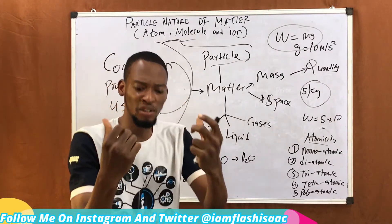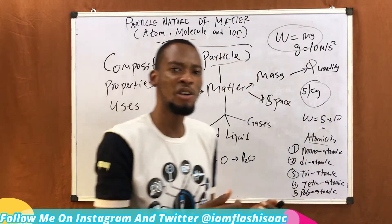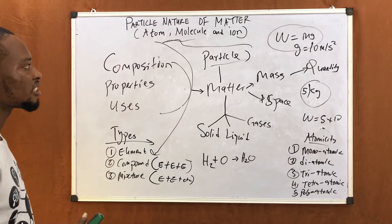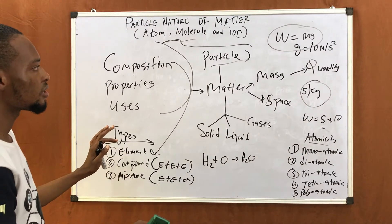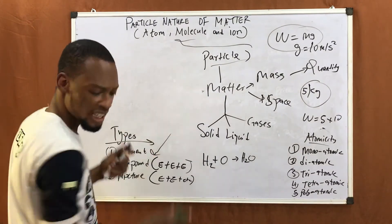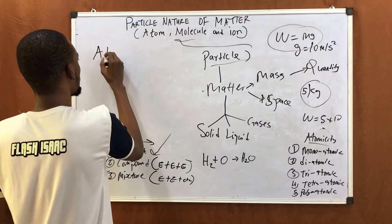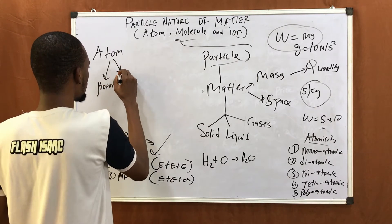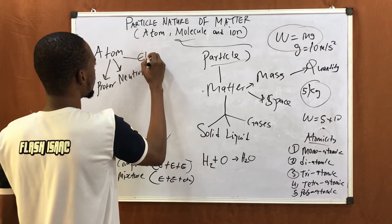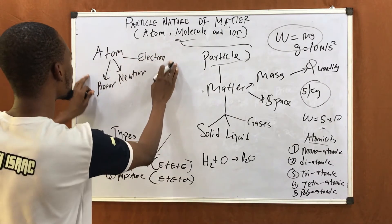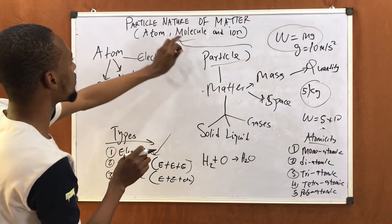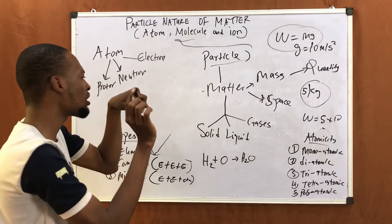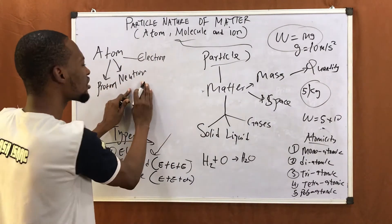Although an atom is the smallest particle of an element, atom itself has particles — they are called subatomic particles. These are proton, neutron, and electron. Proton and neutron are at the center of the atom together making up what is called the nucleus. The electron moves around the atom on the outside.